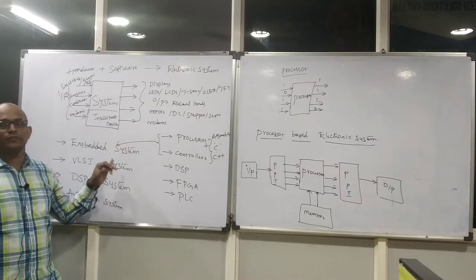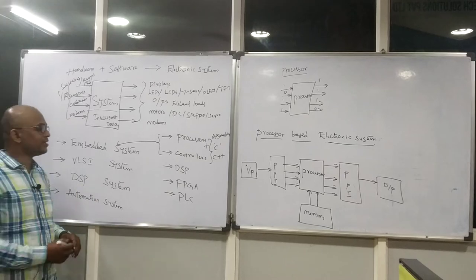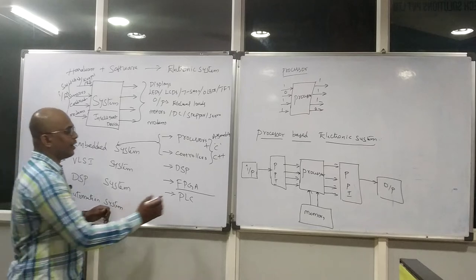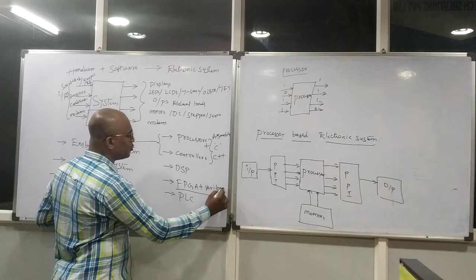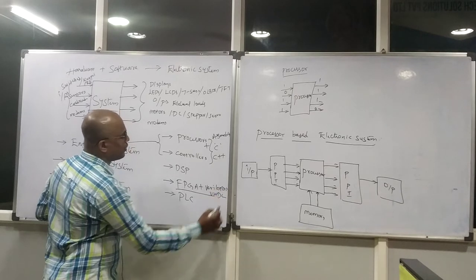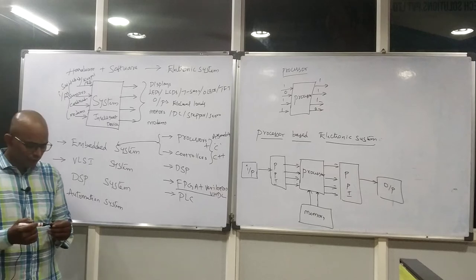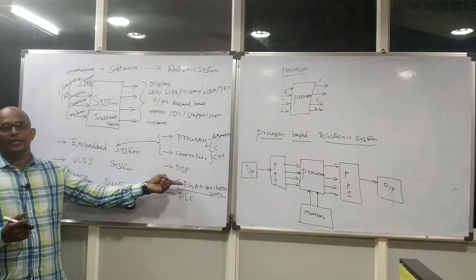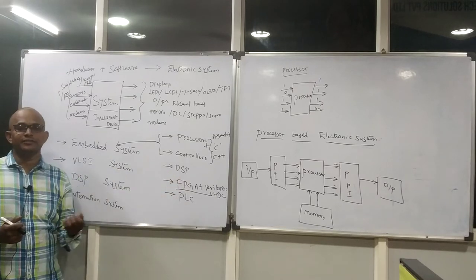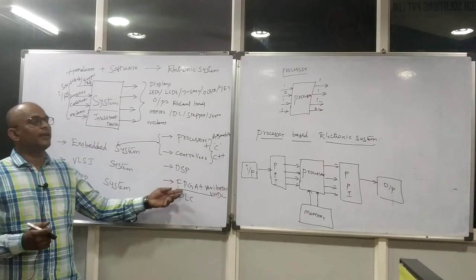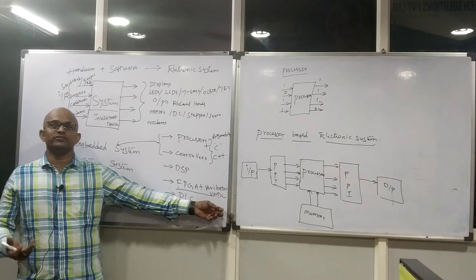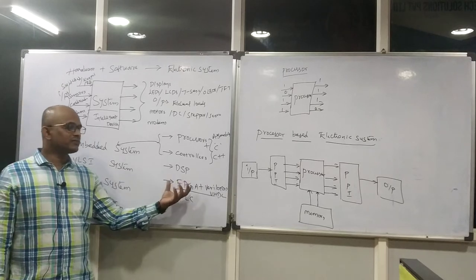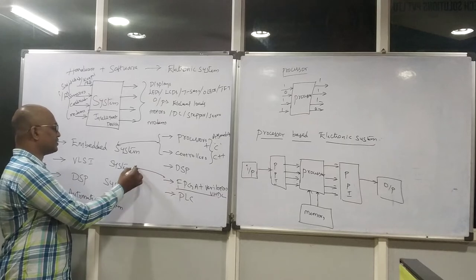The peripherals are your choice — you can take any sensor, motor, or display. But inside, you need to focus on what intelligent device is being used and what programming language they use to develop your software. That combination names your domain. When the product or system comes under VLSI system, the VLSI system is developed with the combination of programmable device FPGA and language Verilog or VHDL. These are the two popular programming languages when you are dealing with the VLSI domain.